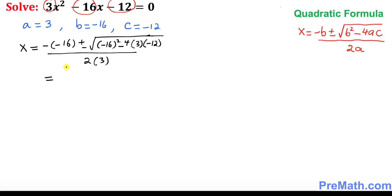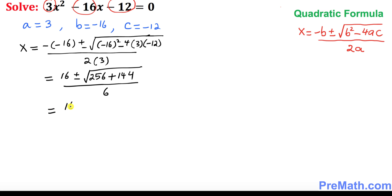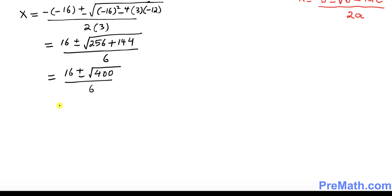So x is going to be negative b — negative and negative become positive — 16 plus or minus. Negative 16 squared is 256, and that simply becomes positive 144, divided by 6. The next step: 16 plus or minus — when you add 256 and 144 that gives you 400 divided by 6. So the next step is 16 plus or minus the square root of 400, which is 20, divided by 6.